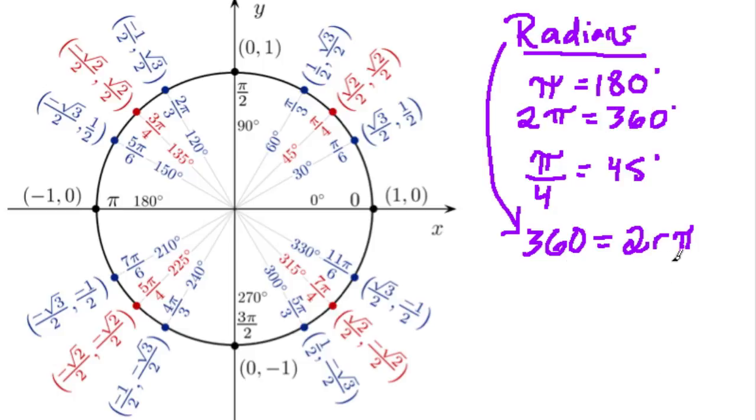And then if I want to solve for pi, I divide both sides by 2 radians. And what do I get? Well, 2 radians divided by itself is just 1. 360 divided by 2r is 180 over r, and that equals pi.